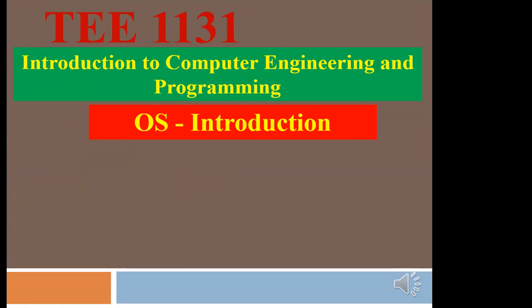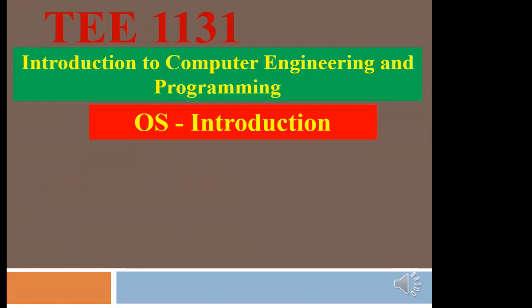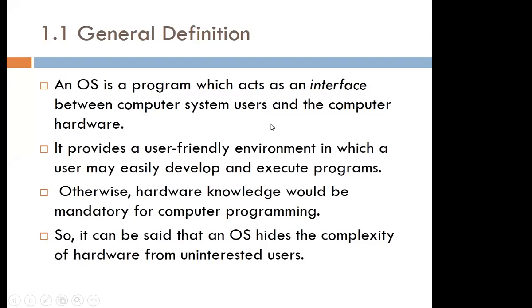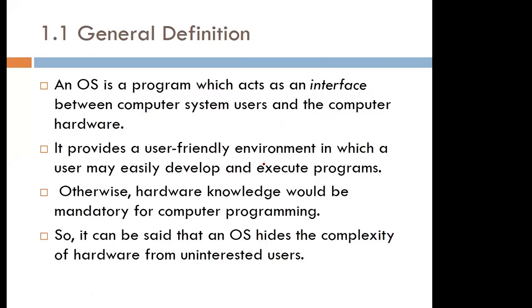When people talk about operating systems, some just use the word OS — that's just a short form of operating systems. So if someone says the OS, they're talking about the operating system. In general, we can say an operating system is a program acting as an interface between the user and the computer hardware — the interface between those two is the operating system.